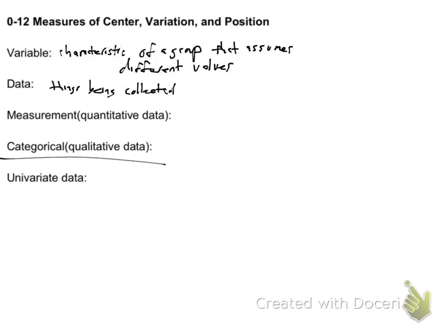And the last one is the univariate data. And that's data that only has one variable. Data using one variable.